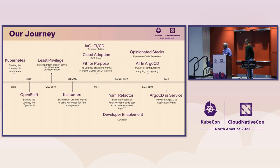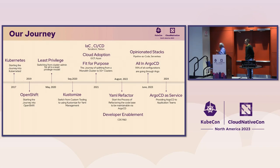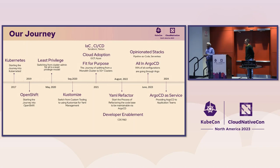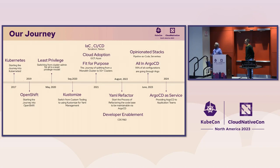In 2021 we started what we call fit-for-purpose clusters — a cluster doing one thing or one set of things rather than a kitchen sink. We started refactoring all our code so that everything is declarative. Nothing we do today is ClickOps; everything has to be done through code, declared ahead of time.